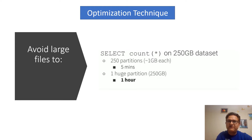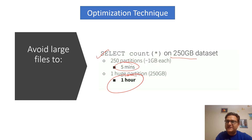For example, we have one SELECT query taking a count out of a 256 GB dataset. If you make 1 GB files, you will have around 250 files and the whole query runs within 5 minutes. But if you make one big file, the same query takes 1 hour. So avoid large files when working with big datasets — this is one of the key optimizations to keep in mind.